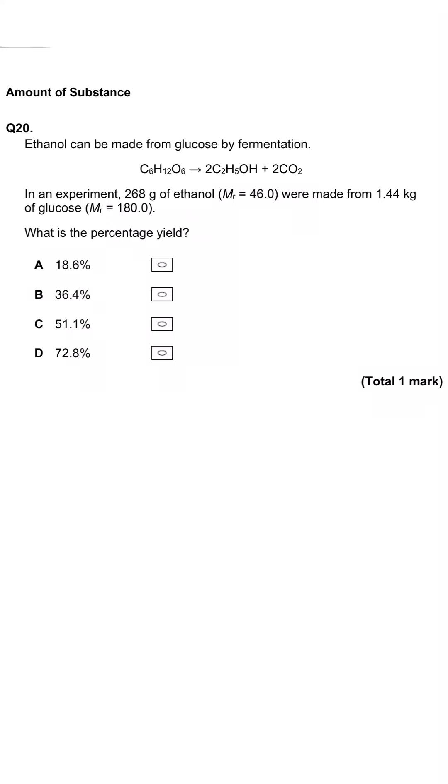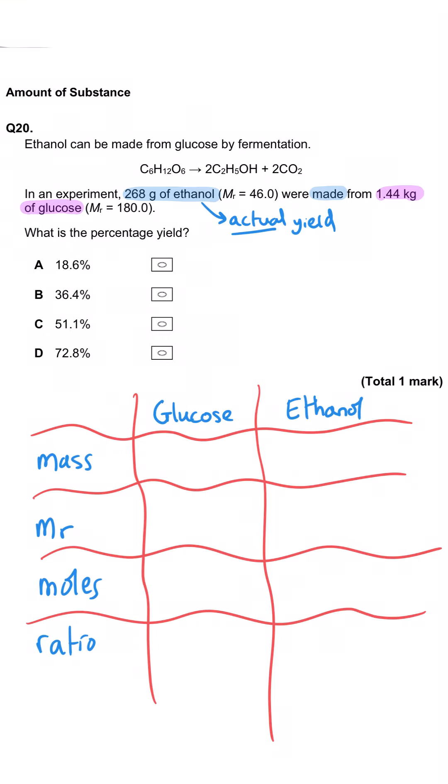This is a question about fermentation. We've been given the equation where glucose turns into ethanol and carbon dioxide. In an experiment, 268 grams of ethanol is produced. This is the actual yield, 268 grams, made from 1.44 kg of glucose. We've been asked what the percentage yield is. First we work out the moles of glucose. Mass is 1.44 kg, needs to be turned into grams. We divide by the MR which we've been given, and we get 8 moles of glucose.